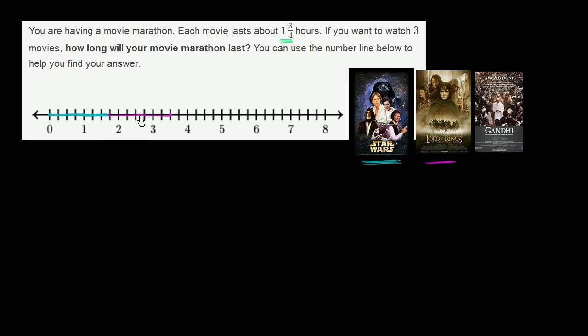Just as I said, 4 fourths and 3 fourths is 7 fourths. So 1 and 3 fourths is the same thing as 7 fourths. You see that over here. When I did the 1 and 3 fourths in blue, I actually marked off 7 fourths.